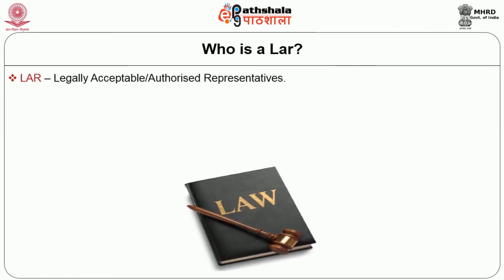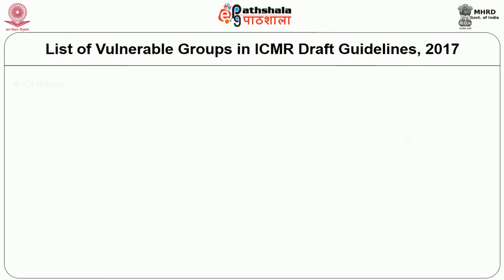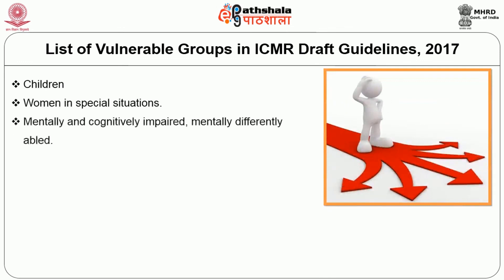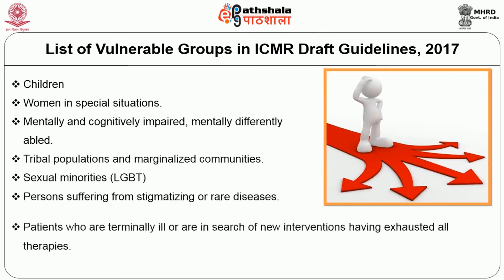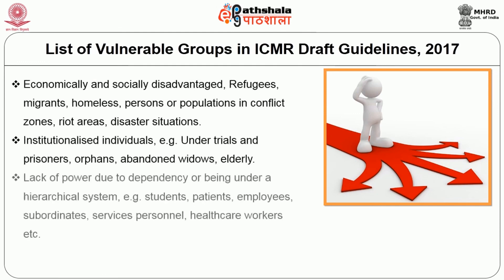In the new ICMR guidelines coming up in 2017, there is a special section on vulnerability which lists the entire group of people considered vulnerable: children, women in special situations, mentally and cognitively impaired persons, tribal populations, sexual minorities, persons suffering from stigmatizing or rare diseases, those who are terminally ill, those who are economically and socially disadvantaged, institutional individuals, and those who have a lack of power due to dependency.